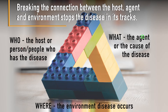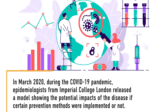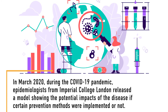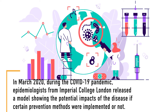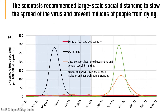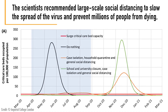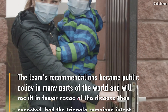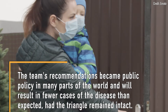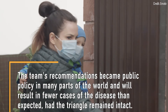Breaking the connection between the host, agent, and environment stops the disease in its tracks. In early March 2020, during the COVID-19 pandemic, epidemiologists from Imperial College London released a model showing the potential impacts of the disease if certain prevention methods were implemented or not. The scientists recommended large-scale social distancing to slow the spread of the virus and prevent millions of people from dying, thus severing the connection between the where and the who. The team's recommendations became public policy in many parts of the world and will result in fewer cases of the disease than expected had the triangle remained intact.